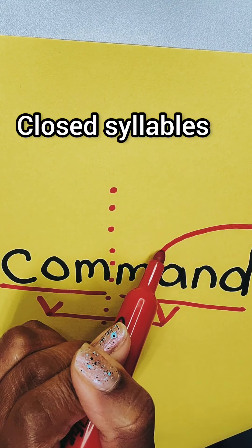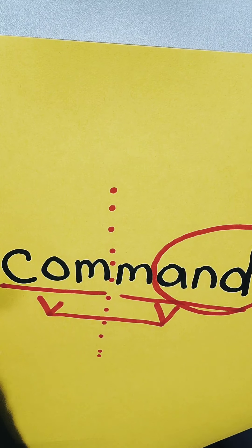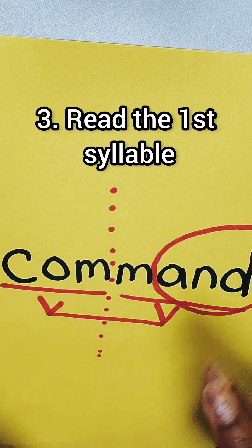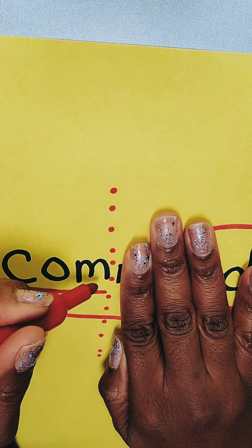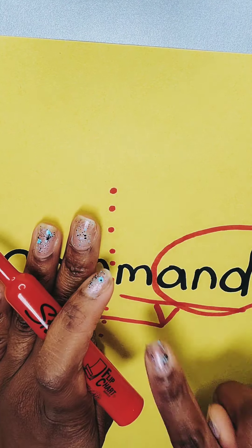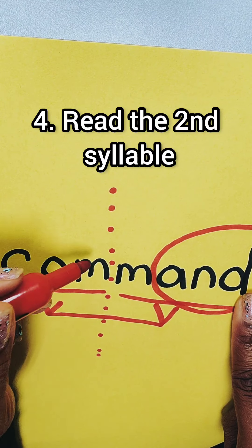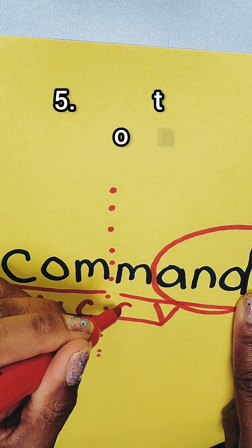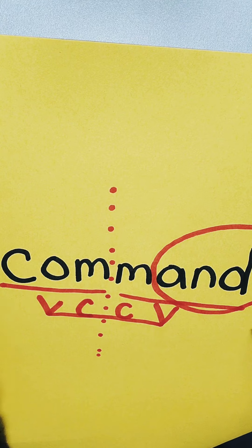I would ask the child: do you identify a word inside of these two syllables? And here's the word 'and.' First we sound out the first syllable — we cover with our hand and say 'com' — then we have 'mand.' Knowing that we have two consonants here tells us that our syllable pattern is a VCCV syllable pattern.